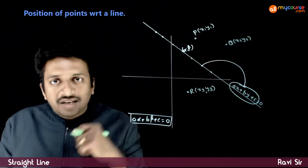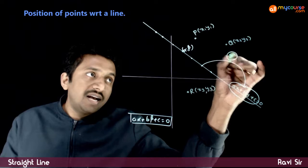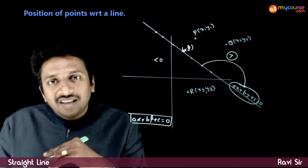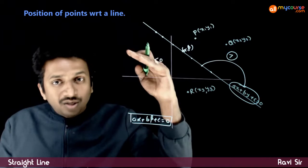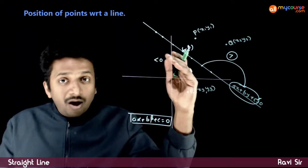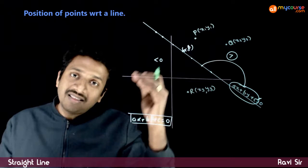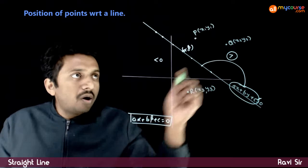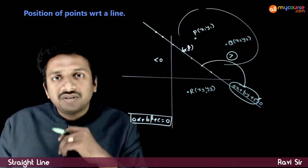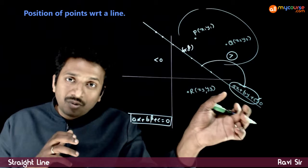On one side of this line, all the points satisfy the inequality greater than 0. On the other side, all the points satisfy the inequality less than 0. So there are two sets separated by a boundary. All the points on the boundary satisfy the equality. All the points on one side satisfy the inequality greater than, and all the points on the other side satisfy the inequality less than. So all the points in one region, when substituted into this expression, give you a positive number, and all the points on the other side give you a negative value.